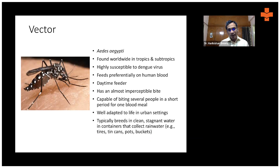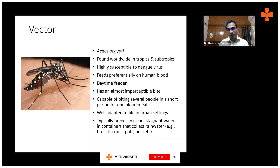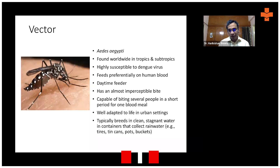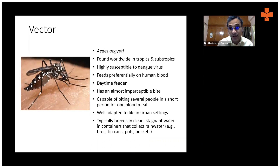This vector, Aedes aegypti, is found worldwide in the tropics and subtropics. This mosquito is highly susceptible to the dengue virus, as the virus must enter the mosquito first before it can transmit to another person. The mosquito feeds preferentially on human blood, and importantly, it is predominantly a daytime feeder.